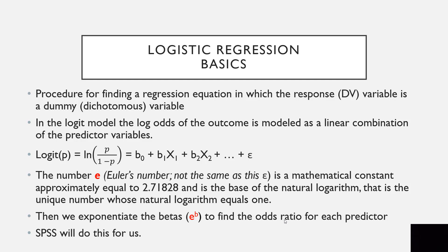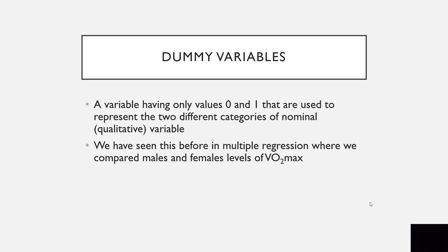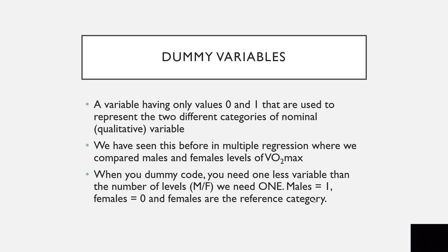We won't do the exponentiation manually — SPSS will. Regarding dummy variables: a variable that has only values 1 and 0 used to represent two different categories of a nominal qualitative variable. We have seen this before in multiple regression when comparing males and females on VO2 max. When you dummy code, you need one less variable than the number of levels. For a two-level gender variable, we only need one variable: males equal to 1, females equal to 0, with females as the reference category.